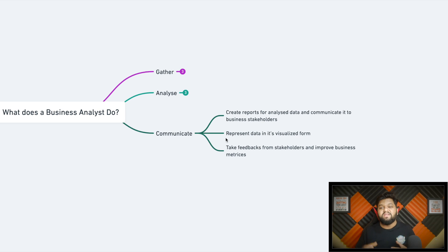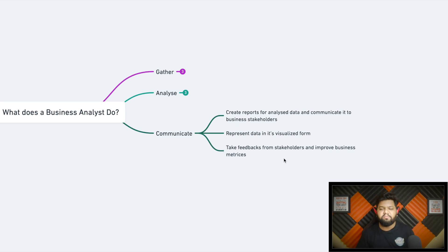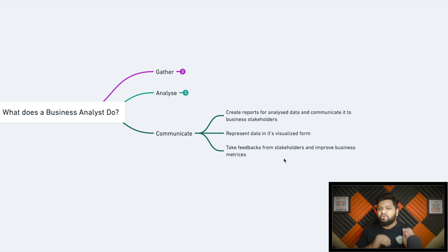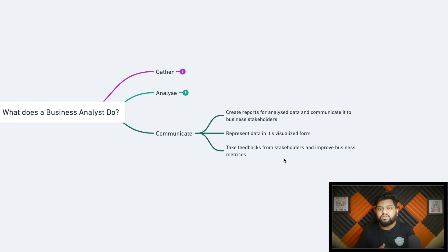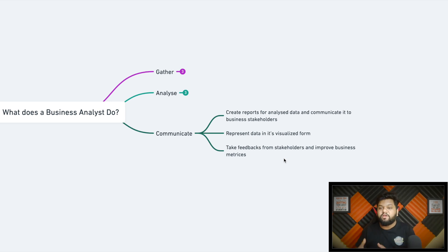The last thing in communication is to take feedback from stakeholders and improve the business metrics. It's not possible that in one single shot you've delivered exactly what they were looking for. There will be feedback — improve these things, add a few more metrics. You need to capture it, reiterate, include those feedbacks in your matrices, and present again. This loop continues until your internal and external stakeholders are satisfied.